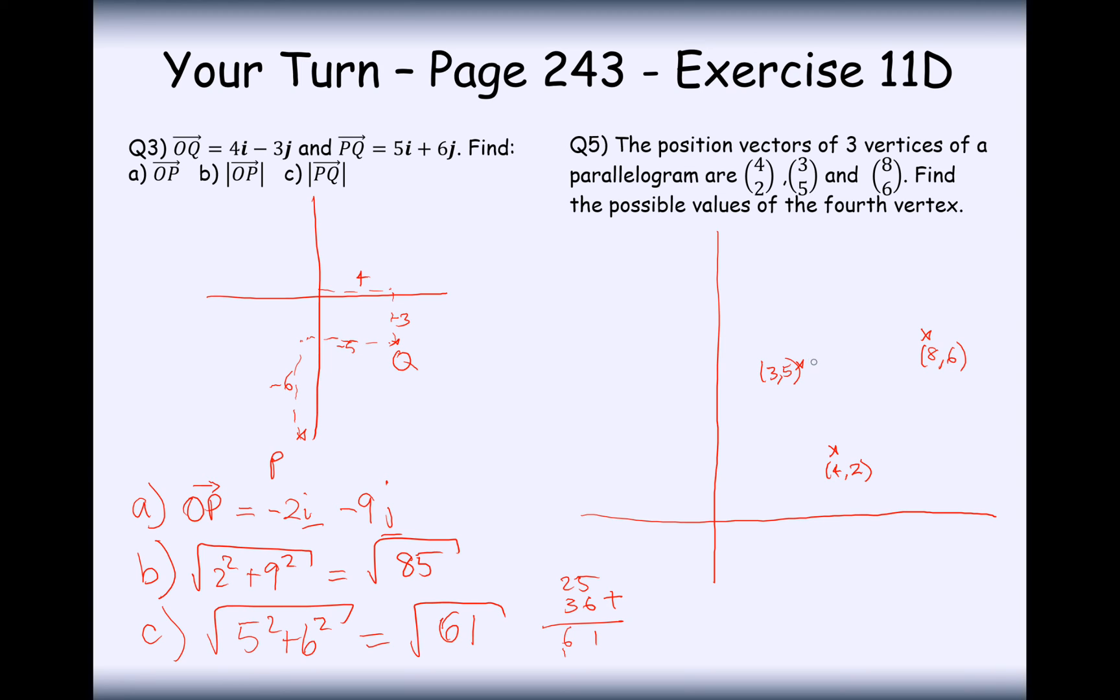For a parallelogram, we're going to have two possible opposite parallel sides here. So either we could have our coordinates down here, making a parallelogram like this, or we could have our points down here. We could also have a point up here as well, creating these two as parallel sides. And we could also have a point, I think that's all the permutations there. So that's all of them there.